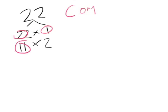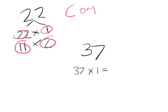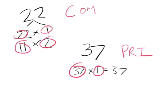Let's do another one — what about 37? What are the factors of 37? You've got 37 times 1. Can you think of any other number that goes into 37 apart from 37 or 1? I can't — there isn't one. That means 37 has only itself and the number one as its factors, so 37 is a prime number.